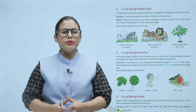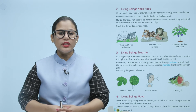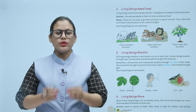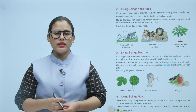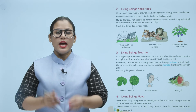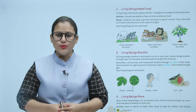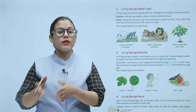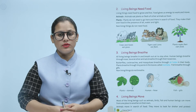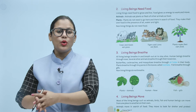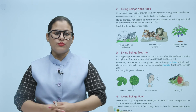Number two: living beings need food. Living things need food to grow and live. Food gives us energy to work and move. Animals eat plants or the flesh of other animals as food. Plants do not need to go here and there in search of food — they make their own food in the presence of air, water, and light. Non-living things do not need food.